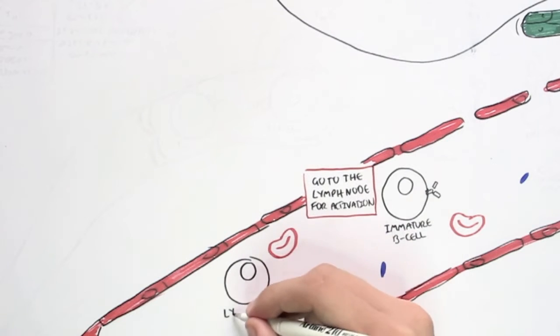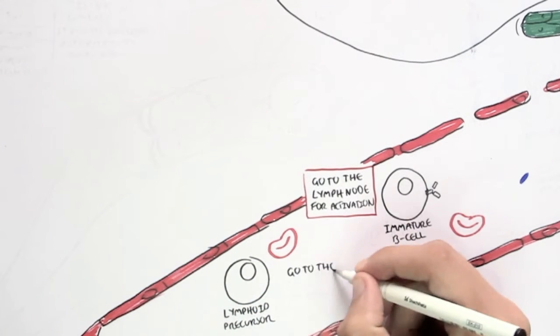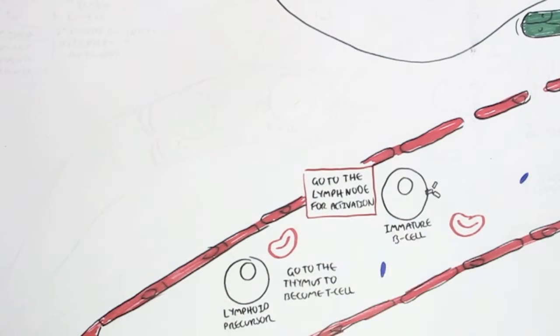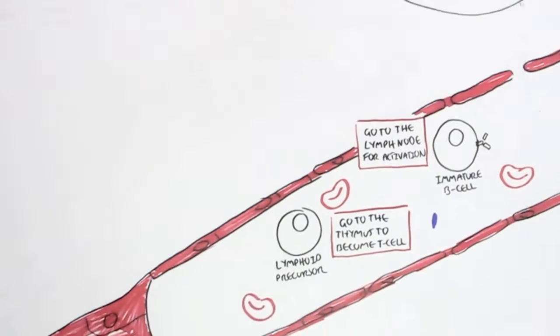Similarly, the lymphoid precursor will float through the blood vessel and will go into the thymus to become different types of leukocytes, particularly T cells.